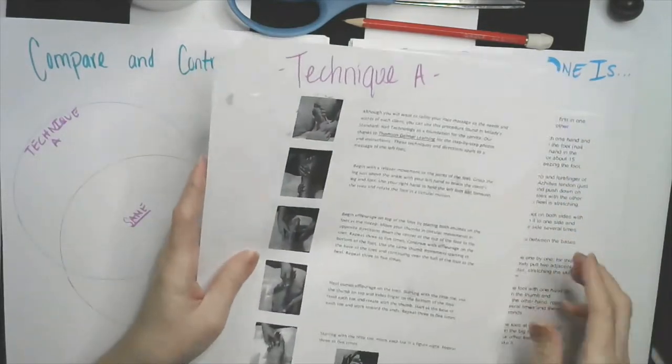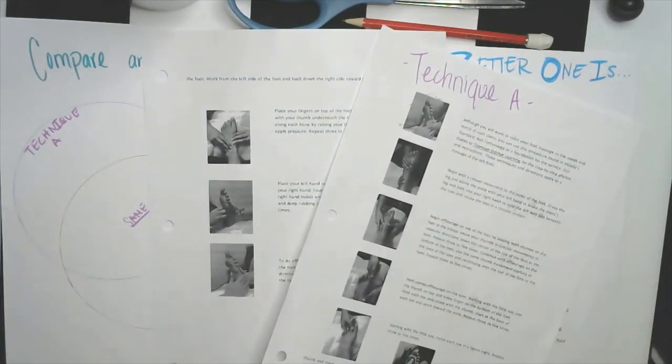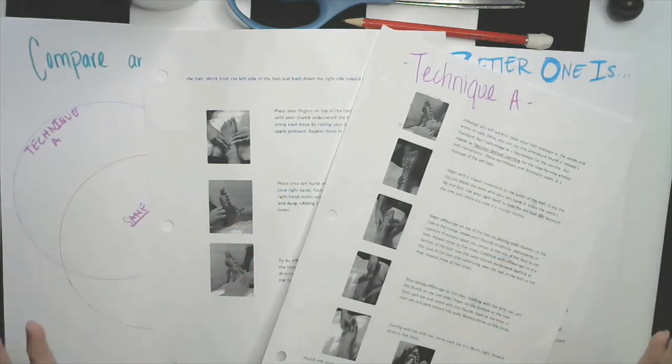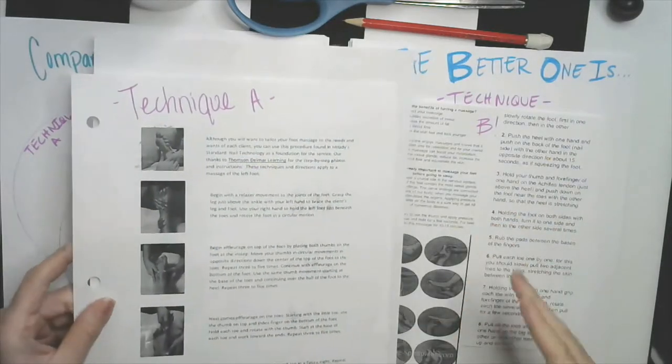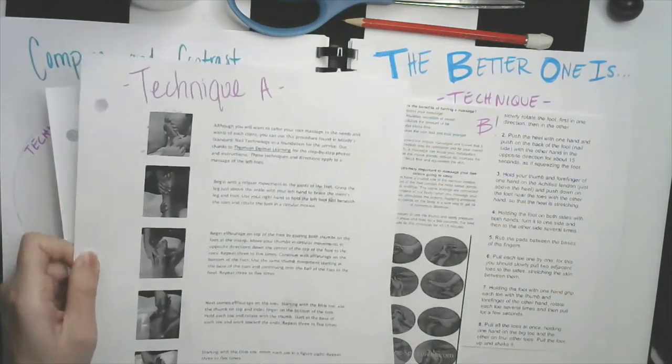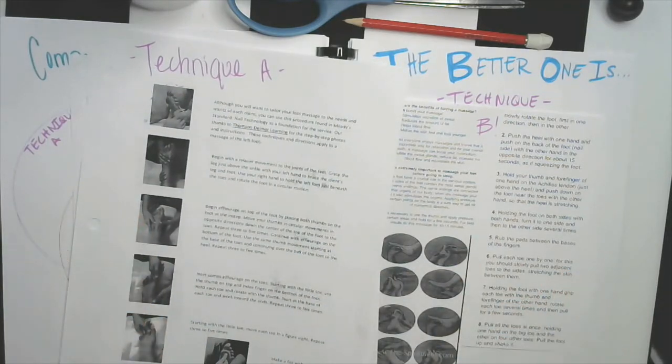What you're going to do today is you're going to do this on yourself. If you're at home and you have somebody that you can work on, you can do this on them and then ask them which one of the two - technique A or technique B - did they like the best, and you can choose based on their opinion. If you're doing it on yourself, then try both techniques and then you choose which one you like the best.